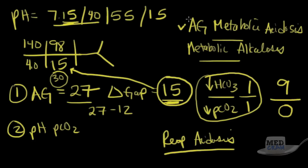In summary, we have a triple acid-base disorder: an anion gap metabolic acidosis, a metabolic alkalosis, and a respiratory acidosis — all identified from the blood gas and CHEM7 alone. Join me for Part 8 for more questions.